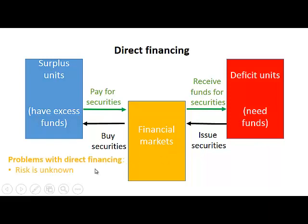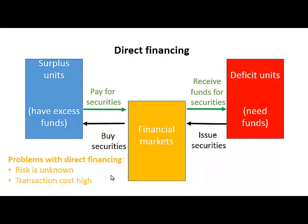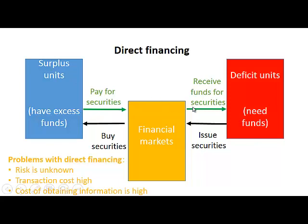There are problems with direct financing. First, the risk is unknown — surplus units may not know the deficit unit and will not know if they are trustworthy, making them reluctant to buy those securities. Transaction costs are also high, as each individual deficit unit has to issue securities, which is a very expensive process. Additionally, the cost of obtaining information is high because surplus units are generally not in the business of gathering financial information about companies.